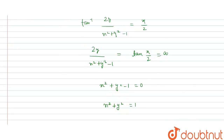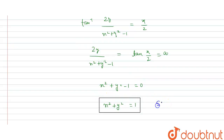This is the equation of a circle with center (0, 0) and radius equal to 1. So we can say that Statement 1 is true. Now let's solve Statement 2.